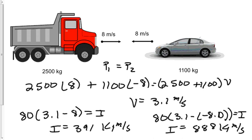So we see that even though the impulse between the vehicles is the same and the force of collision between the vehicles is the same, if we look at what happens to a person inside, there's a difference in their change in momentum. The reason is the 80 kg person in the truck does not change direction — they start at 8 m/s and end at 3.1 m/s. The person in the car, though, ends with a positive 3.1 m/s but started with negative 8 m/s. That's why we see the difference in impulse for the people inside the vehicles.